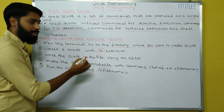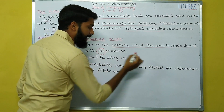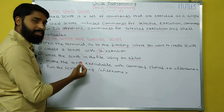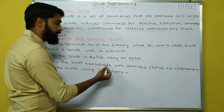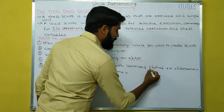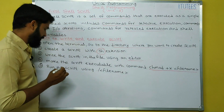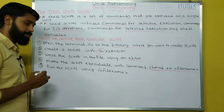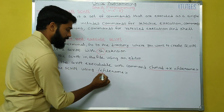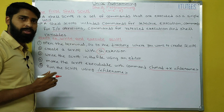The third step: write the script in the file using an editor. The fourth step: make the script executable with the command chmod +x filename. The fifth step: run the script using ./filename.